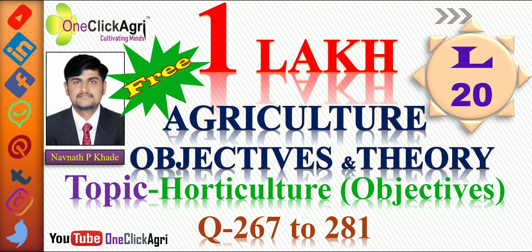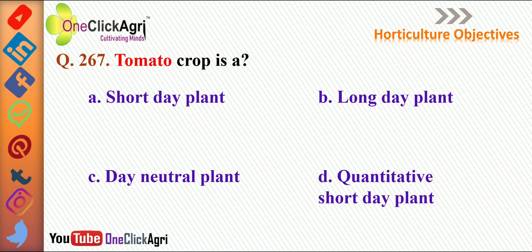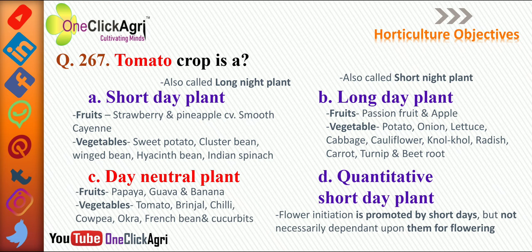Question: Tomato is what type of crop? The right answer is day neutral plant. On the basis of day length requirement for fruits and vegetables, day neutral plants include fruits such as papaya, guava, and banana, and vegetables such as tomato, brinjal, chilli, cowpea, okra, french bean, and courgette/peas.